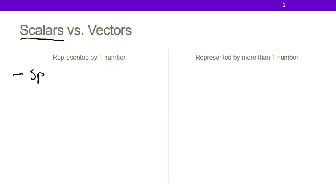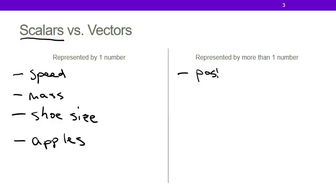Scalars are things like your speed, or your mass, or your shoe size, or the number of apples you ate today. All of these things are things that you could represent with one number. There are, however, things that we can't represent with one number, like your position in space or the acceleration you're experiencing. There are lots of things in nature that will require more than one number to describe them. These are the things that we will call vectors.